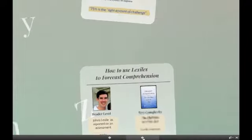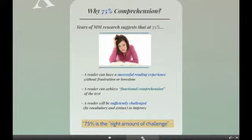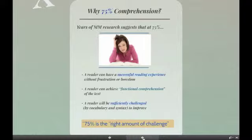75% comprehension is a sweet spot for reading and for reading growth. At this comprehension level, the text is easy enough that a student can grasp the content of what is being read. The new words and sentence structures don't interfere with understanding, while at the same time a student is encountering some new vocabulary and sentence structures. Students are able to discern the meaning of new words from context, and are also able to figure out new syntax because they understood the overall meaning.